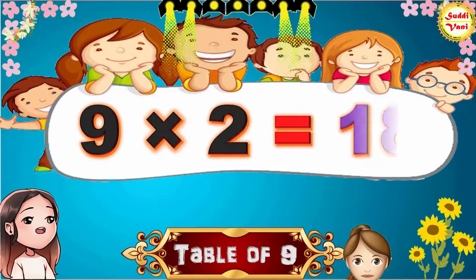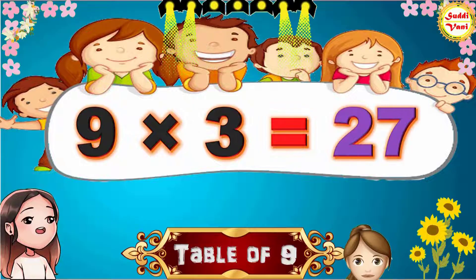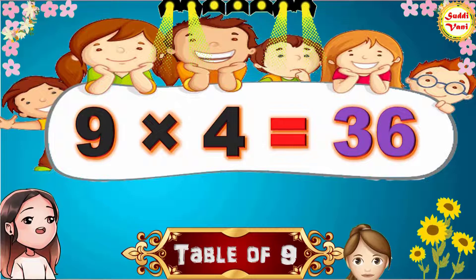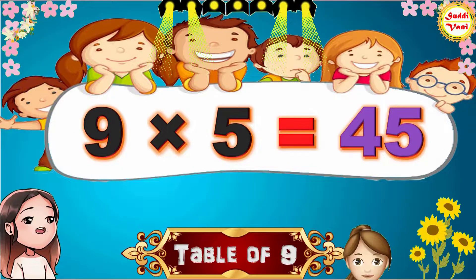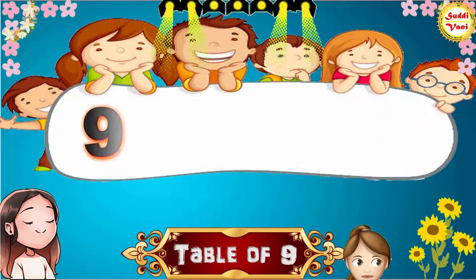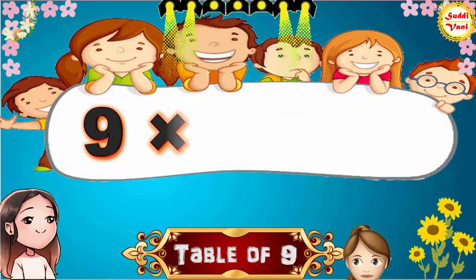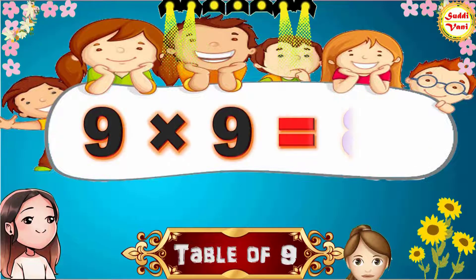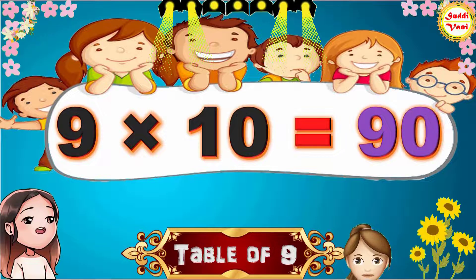9 2s are 18, 9 3s are 27, 9 4s are 36, 9 5s are 45, 9 6s are 54, 9 7s are 63, 9 8s are 72, 9 9s are 81, 9 10s are 90.